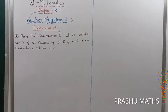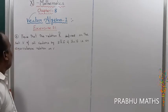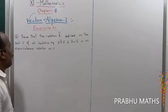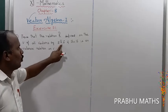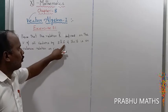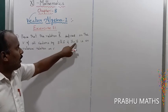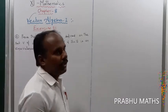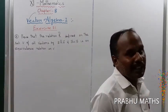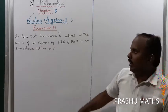Exercise A.1, second sum: Prove that the relation R defined on the set B of all vectors, where A is related to B if A equals B, is an equivalence relation on B. We already discussed this in the first lesson. So, equivalence relation.